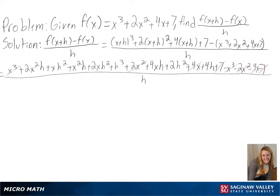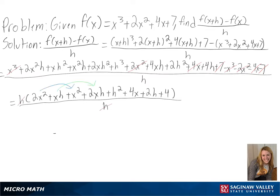And finally, we can take out an h from our terms and cancel out our h's. And after simplifying, we are left with 3x squared plus 3xh plus h squared plus 4x plus 2h plus 4 as our final answer.